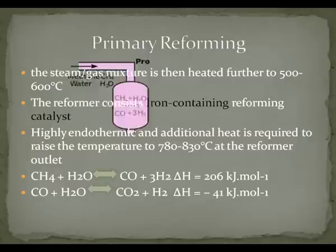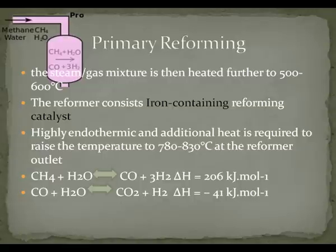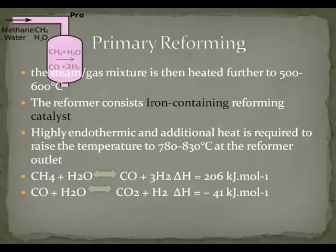In the primary reformer, the steam-gas mixture is heated further to between 500 to 600 degrees Celsius after desulfurization. Because the reaction is highly endothermic, additional heat is required, so the temperature is raised to between 780 to 830 degrees Celsius at the reformer outlet. The reformer consists of iron-containing reforming catalysts. A catalyst provides an alternative pathway with lower activation energy, increasing the reaction rate while remaining chemically unchanged at the end of the reaction. The first Haber-Bosch reaction chambers used osmium and ruthenium as catalysts; however, under Bosch's direction in 1909, a much less expensive iron-based catalyst was discovered that is still used today.